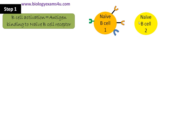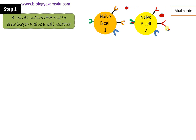There is also a second naive B cell with a different specificity. Inside the immune system there are numerous B cells with different specificities directed against different pathogens — specifically different epitopes of different pathogens. When a viral particle binds to a B cell receptor, it causes the activation of that B cell. B cell activation occurs when antigen binds to the naive B cell receptor.